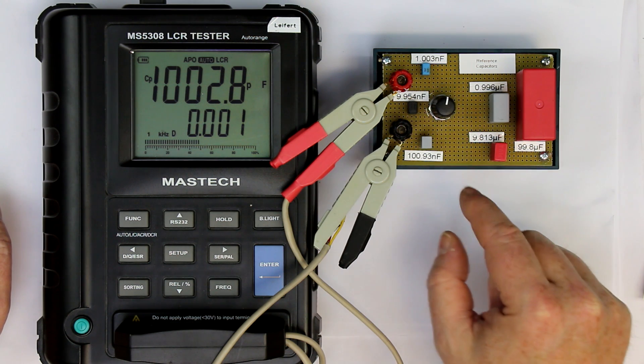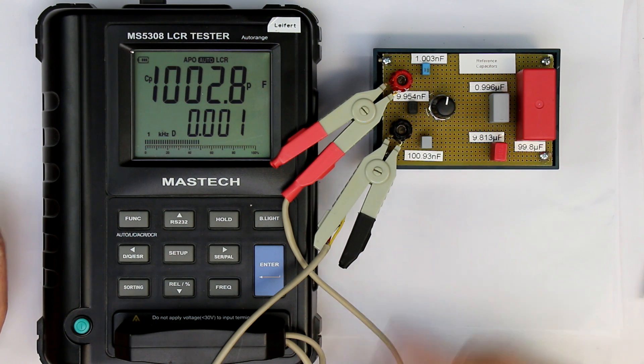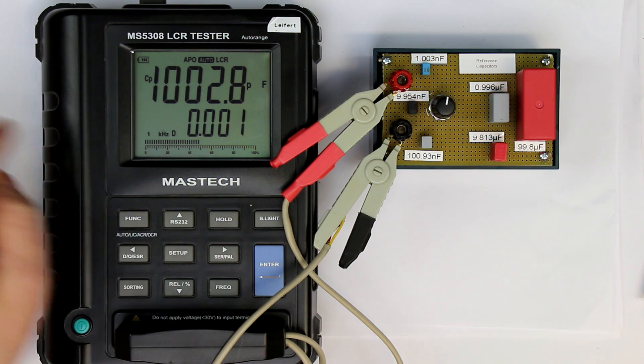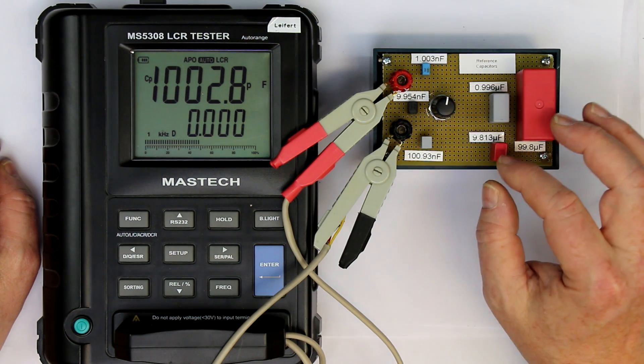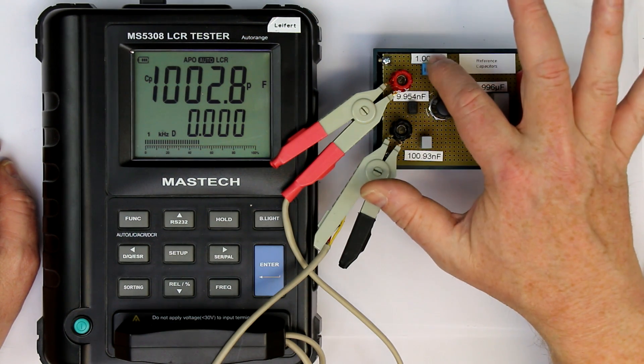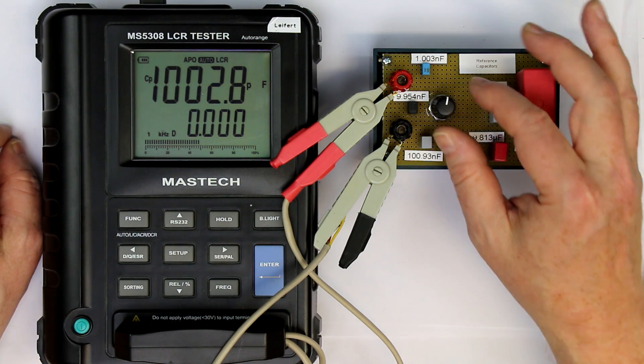And let's repeat that for all the six values. So the one nanofarad 1% comes in with 1.003 nanofarads, so better than 1%. And again, you can't decide if it's the capacitor or the LCR meter.